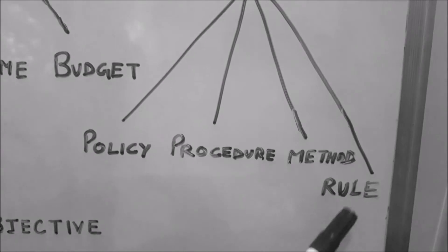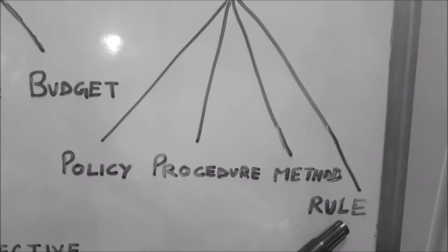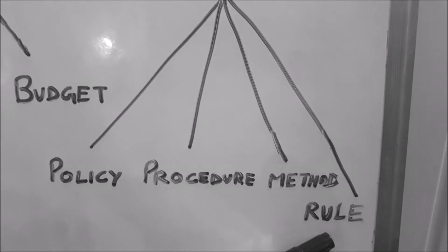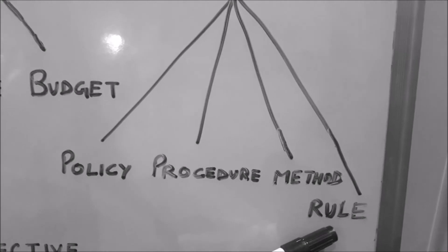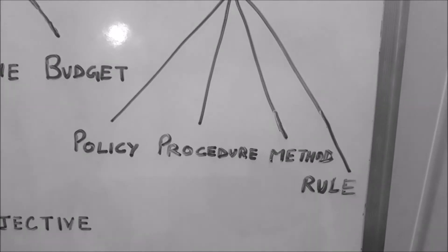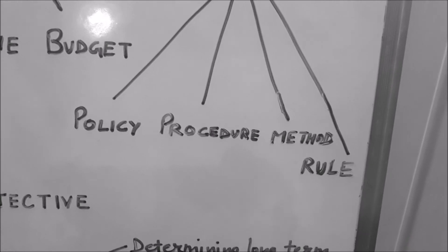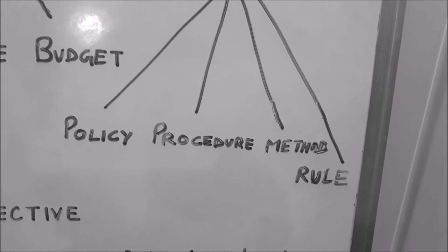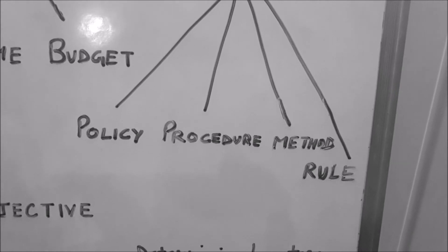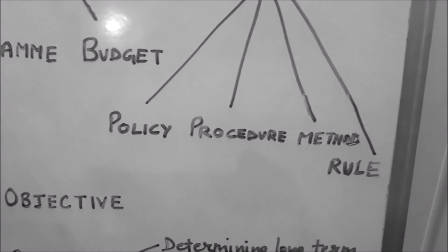The fourth type of standing plan is rule. Rules are specific statements which tell what is to be done and what is not to be done in a given situation. Rules are more strict than policy, and there are provisions of fines and penalties for violations. For example, smoking is not allowed inside business premises, or mobile phones are not allowed in school. Another example: if a debtor does not pay within 15 days, 15% interest will be charged — that interest is the penalty.